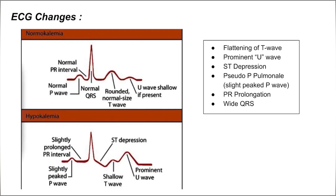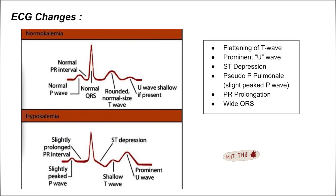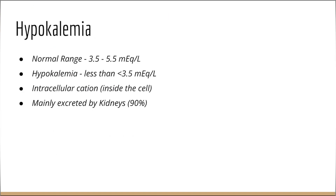The most important part is the ECG changes. Compared to normal kalemia, in hypokalemia we get a slightly peaked P wave, slightly prolonged PR interval, ST depression, flattening of T wave or shallow T wave, and prominent U wave. To revise: flattening of T wave, prominent U wave, ST depression, pseudo P pulmonale — a slightly peaked P wave — PR prolongation, and quiet QRS.